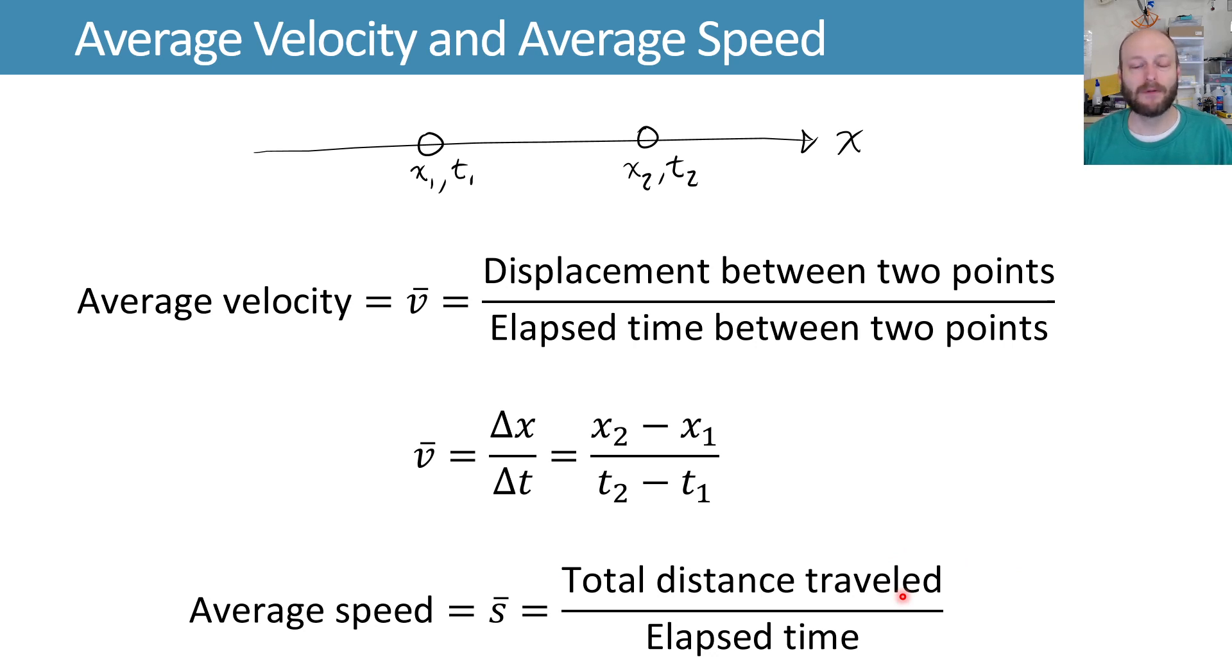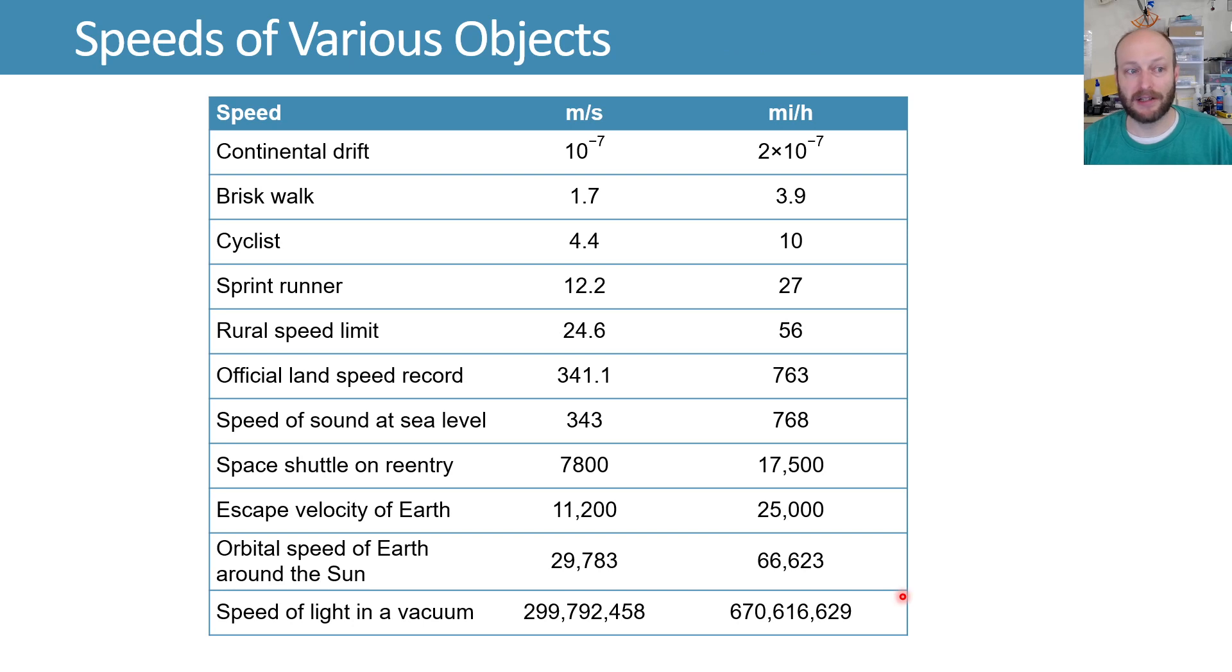To give some context for velocities and speeds, here are some speeds of various objects, where you can see continental drift is happening at about 10 to the negative 7th meters per second, which is 2 times 10 to the minus 7th miles per hour, approximately. We can walk about 2 meters per second or 4 miles per hour. That's a pretty quick walk. Most people walk between 2 to 3 miles per hour and so forth up to very fast things like the orbital speed of Earth around the sun.